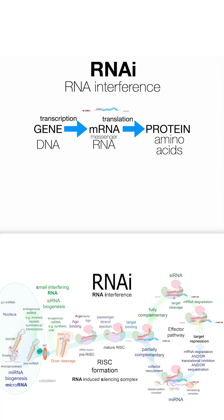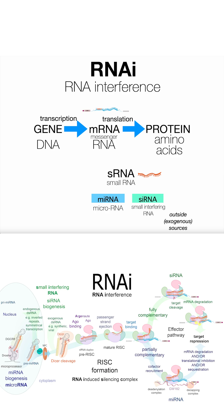RNAi, RNA interference, uses small pieces of RNA called small RNAs about 21 nucleotides long. These can be microRNAs, miRNAs, or small interfering RNAs coming from outside exogenous sources.